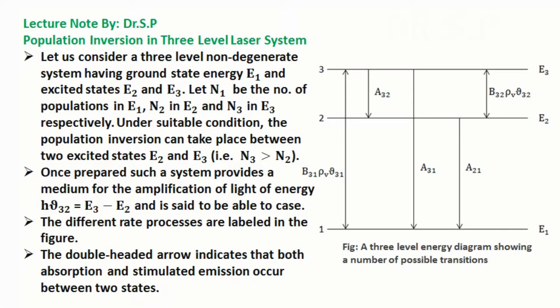In this tutorial we will discuss population inversion in three-level laser system. Let us consider a three-level non-degenerate system having ground state energy E1 and excited states E2 and E3. Let N1 be the number of populations in E1, N2 in E2 and N3 in E3 respectively.